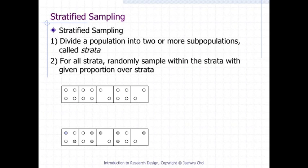Sometimes, the complete list of the population is not easy to obtain. Instead, we might have good access to the list of subgroups, so it would be more convenient using those subgroups. If we collect data using: one, divide a population into two or more subpopulations called strata; two, for all strata, random sample within the strata with given proportion over strata; this sampling method becomes stratified sampling. For example, we can use schools as a subgroup, and then we can randomly select students from each school.